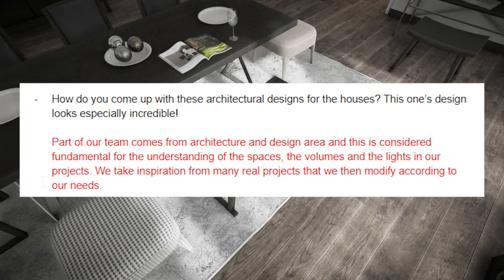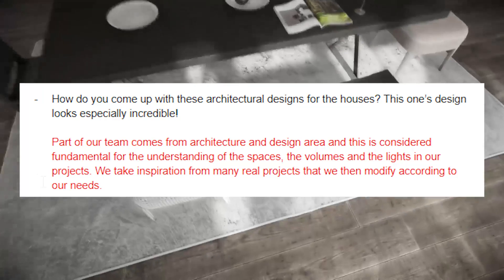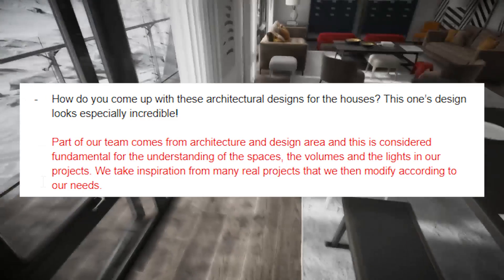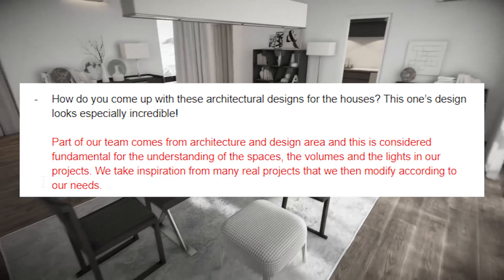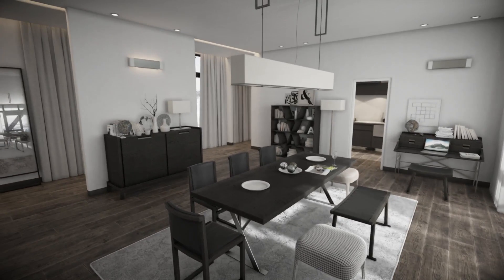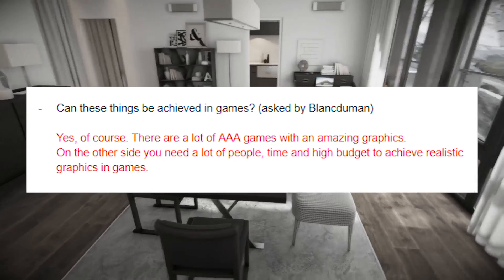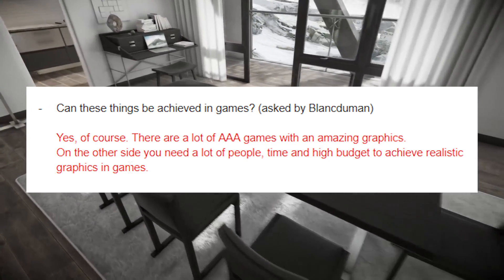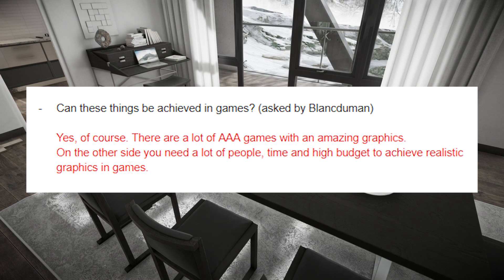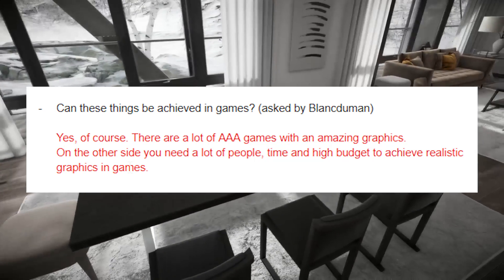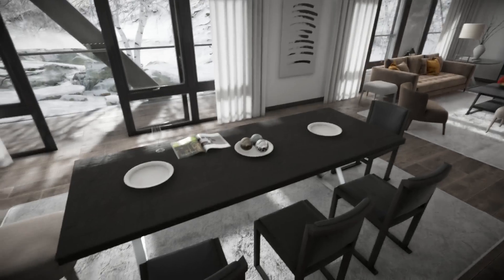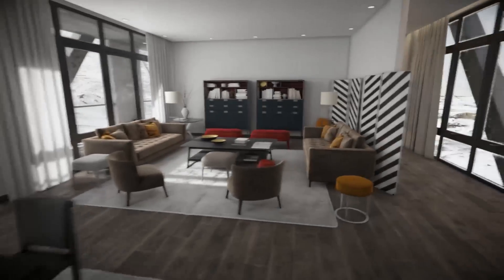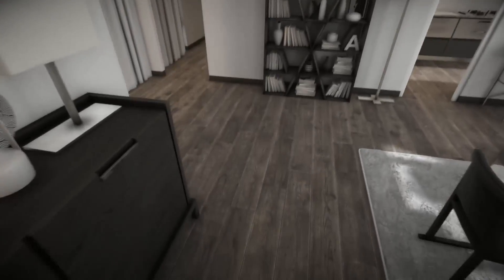They replied: part of our team comes from the architecture and design field, which is considered fundamental for understanding the spaces, volumes, and lights in our projects. We take inspiration from many real projects that we then modify according to our needs. The third question, from Blank Duman on our Discord: can these things be achieved in games? Oneiros replied: yes, of course — there are a lot of AAA games with amazing graphics. On the other side, you need a lot of people, time, and a high budget to achieve realistic graphics in games. Though I'd add: it really depends on your experience, because even solo you're not engine-limited — it's about experience.